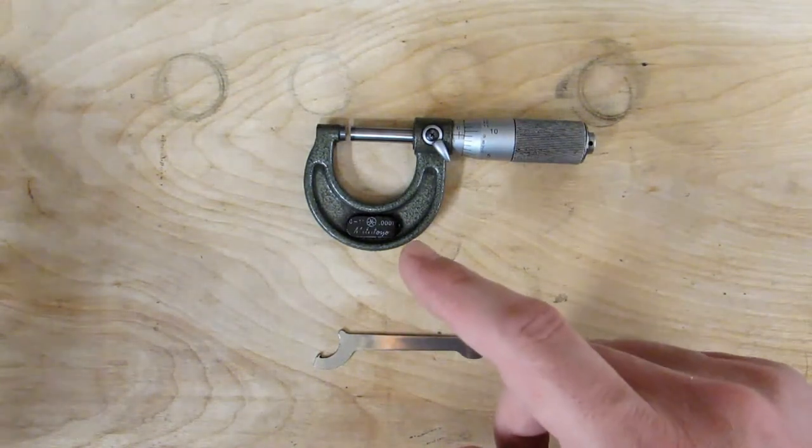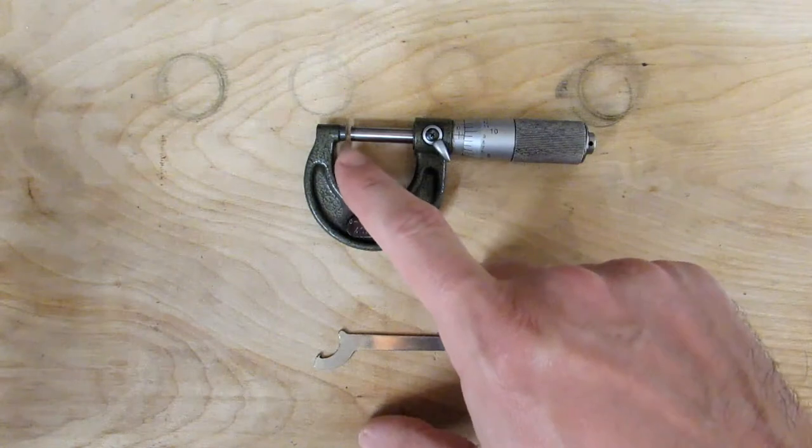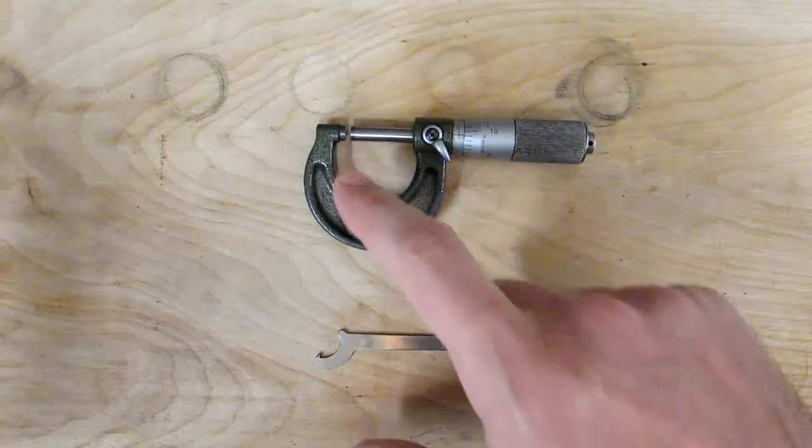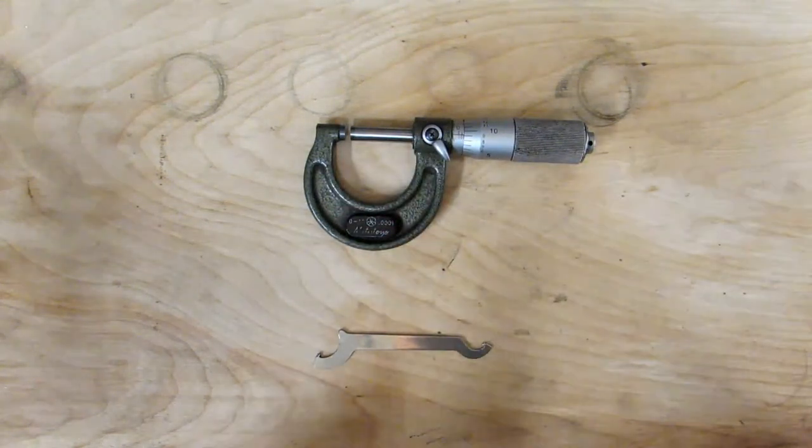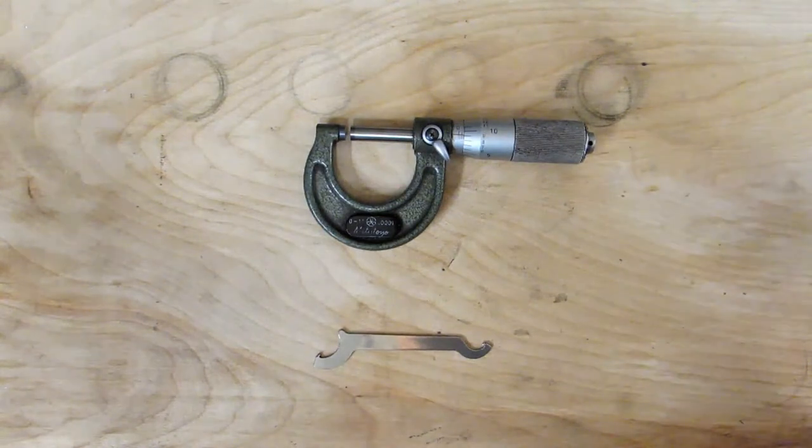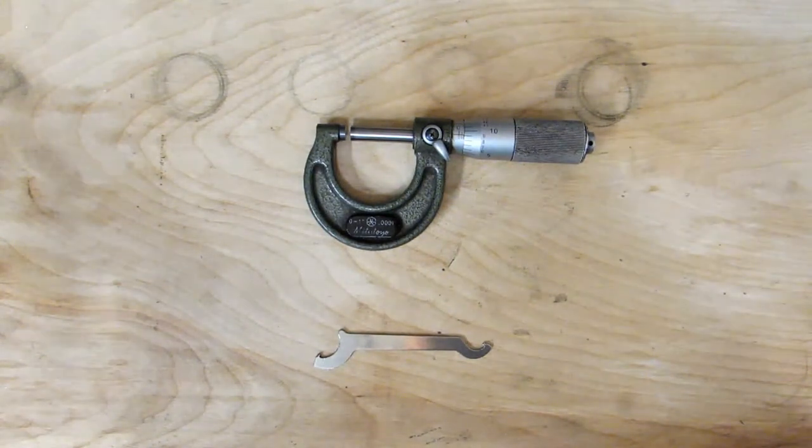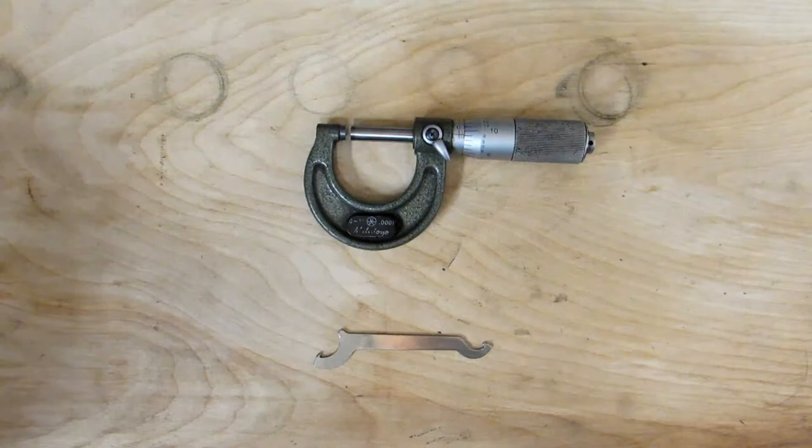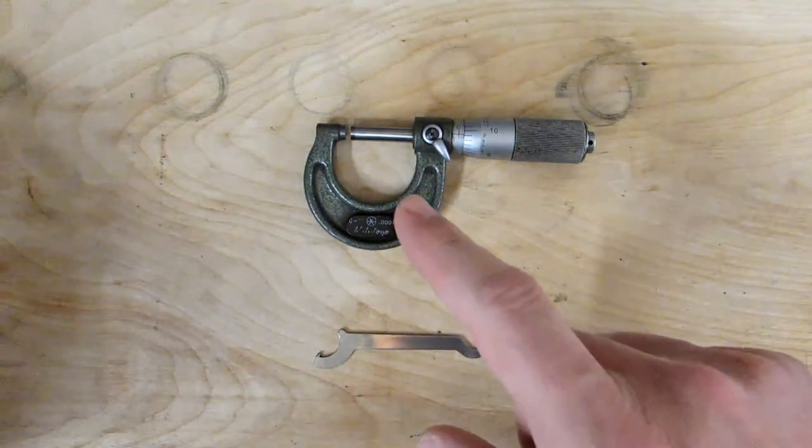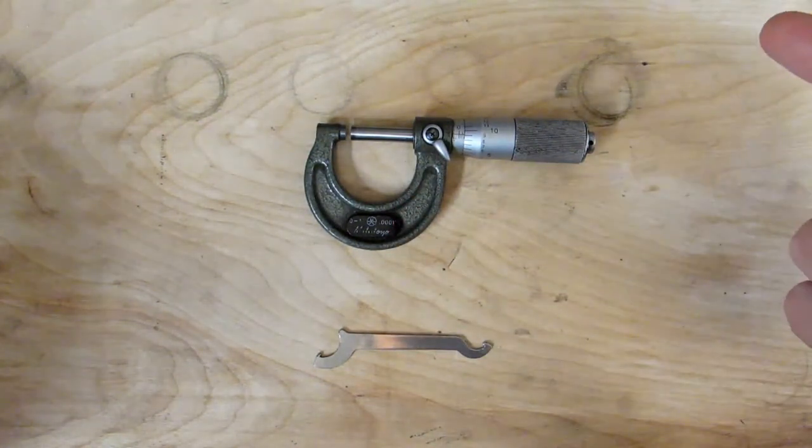Cleaning is the most important part and the first thing that you should do because you want to make sure that the anvil faces don't have any chips on them or lint or anything that could potentially affect your measurement. Any foreign matter is going to affect your measurement. So for a 0 to 1 inch micrometer like this one or if it was a 0 to 25 millimeter micrometer,